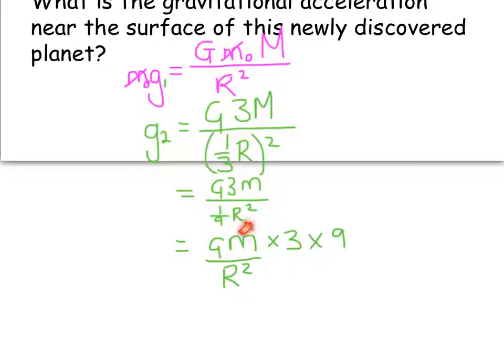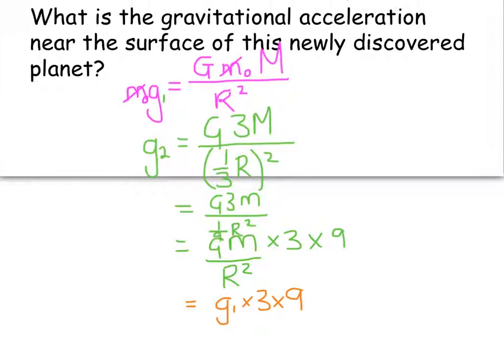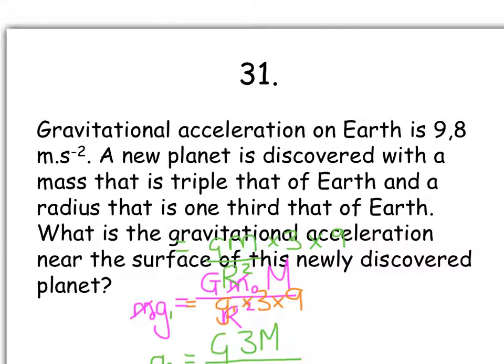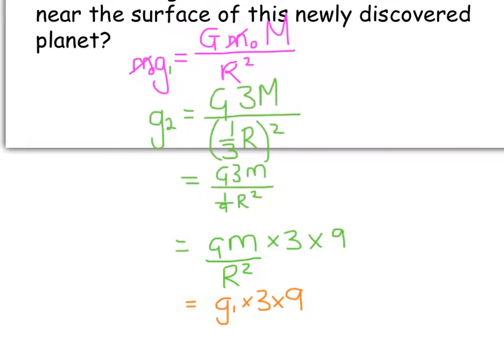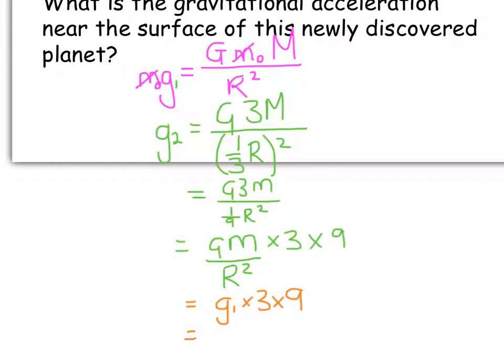But I do know that gm over r squared is equal to my original g1 value over there. So I am going to substitute in whatever that g1 value was, times 3 times 9. And I was told at the beginning that that g value was 9.8 m per second squared. So I am in a position to substitute that value in, and I land up with that being 9.8, and I get 264.6 m per second squared is the new gravitational acceleration.